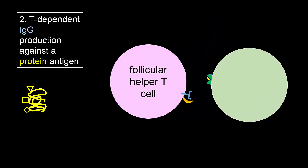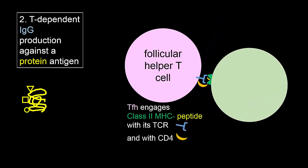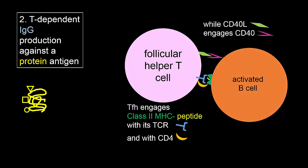Individual peptides are loaded onto MHC class II molecules, which then move to the cell surface. A follicular helper T cell that recognizes a peptide shown on class II MHC eventually arrives and binds. CD4 strengthens the binding, and an activation signal begins. CD40 ligand on the T cell engages CD40 on the B cell, providing an accessory signal.